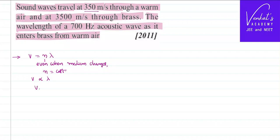As λ is the wavelength, it changes with respect to the medium. So V_air / V_brass = λ_air / λ_brass. V_air is given as 350 meters per second, V_brass is given as 3500 meters per second.